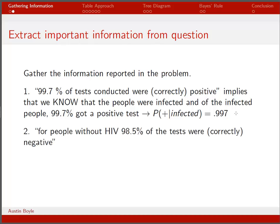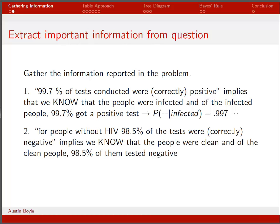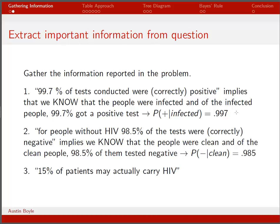The next thing we're told is that for people without HIV, 98.5% of the tests were correctly negative. This implies we know the people were clean, and of them, 98.5% tested negative. Written in math: the probability of a negative test given you're clean is 0.985. Third, 15% of patients may actually carry HIV, so the probability that they're infected is 0.15.